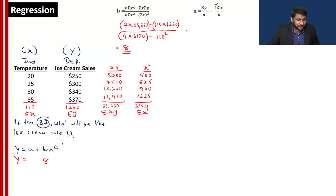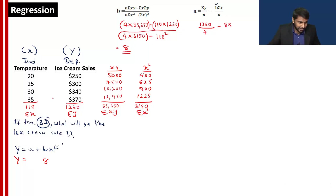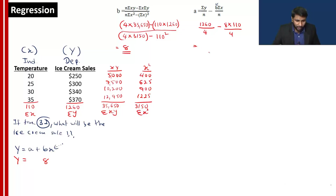We found the B value — B equals 8. Now let's find the A value. The formula is: A = (sigma Y / n) minus B×(sigma X / n). Sigma Y is 1260, n is 4, B is 8, sigma X is 110. So A = (1260/4) minus (8×110/4). The A value we are getting is 95.